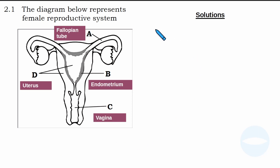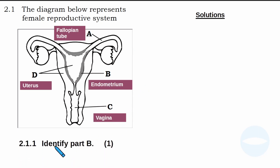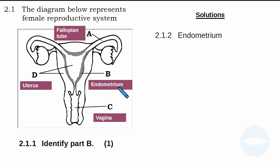Now I will go to the questions. The solutions will appear here and I will explain everything. Question 2.1.1 says: identify part B. It is worth one mark. Part B is the wall inside the uterus — the name of it is the endometrium. So the answer to 2.1.1 is the endometrium.